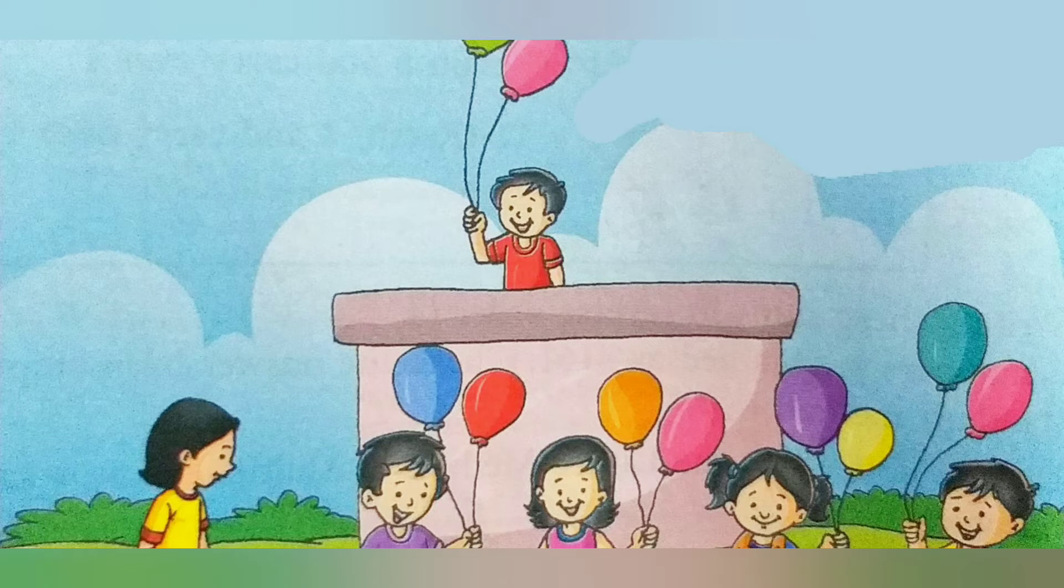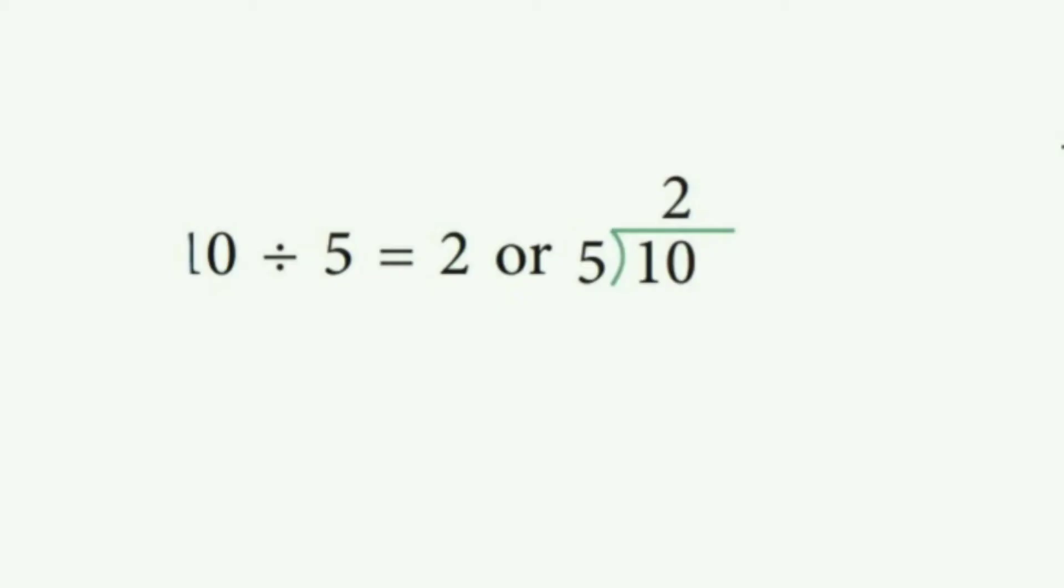Each child got two balloons. So we can write this mathematically as 10 divided by 5 equals 2. This statement, 10 divided by 5 equals 2, is called a division fact.